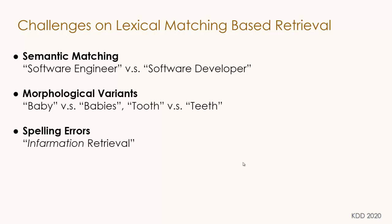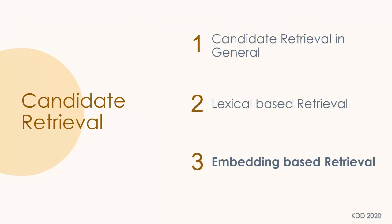Keyword-based, entity-based, and hybrid retrieval are all categorized as lexicon-matching-based retrieval. There are three major challenges with lexicon-based retrieval: first, lack of semantic matching — searching 'software engineer' cannot return results for 'software developer'; second, morphological variants — 'baby' and 'babies' are different forms and hard to match; third, spelling errors. To overcome these challenges, we need embedding-based retrieval.